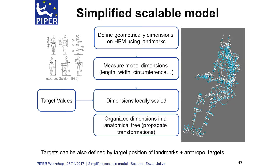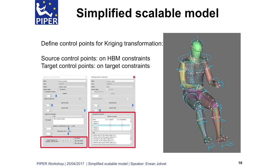You can also use as a target not only a dimension value — you can also use a target location coming from whatever you have in your workflow, and you can drive the target value using this target landmark location plus some additional anthropometric dimensions. So now we have a way to drive and transform this geometrical information into control points for meshing or other stuff, for example.